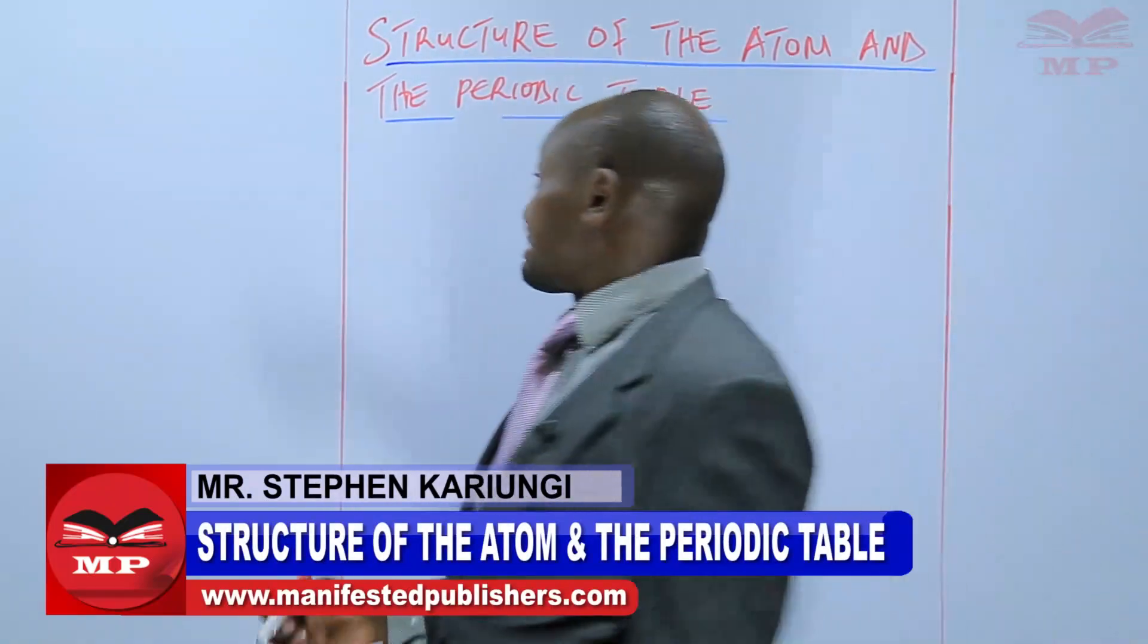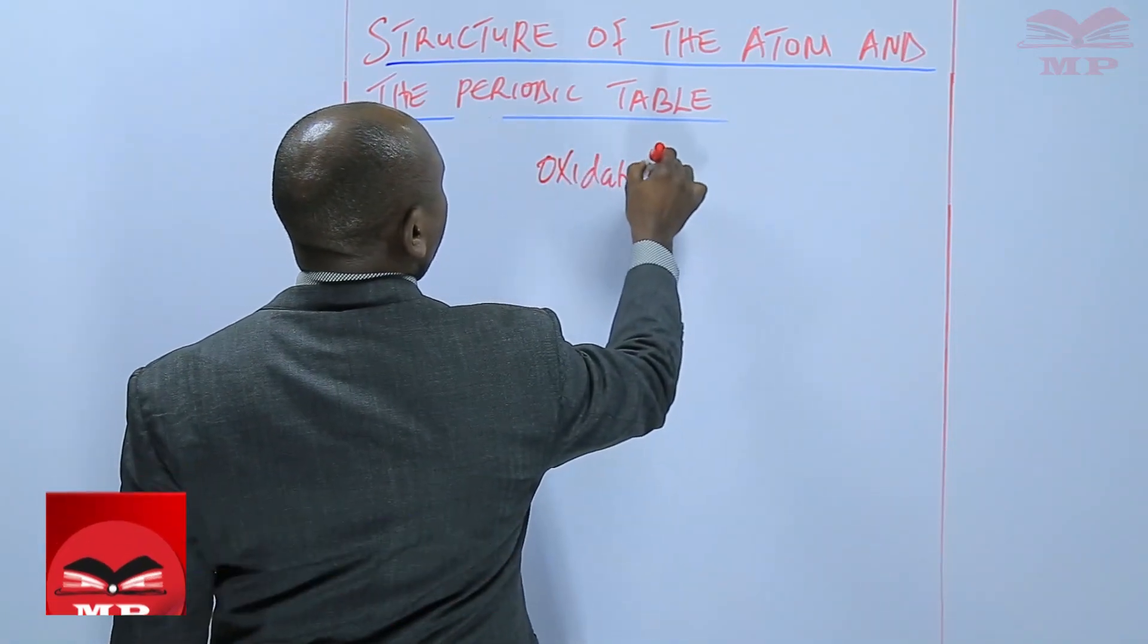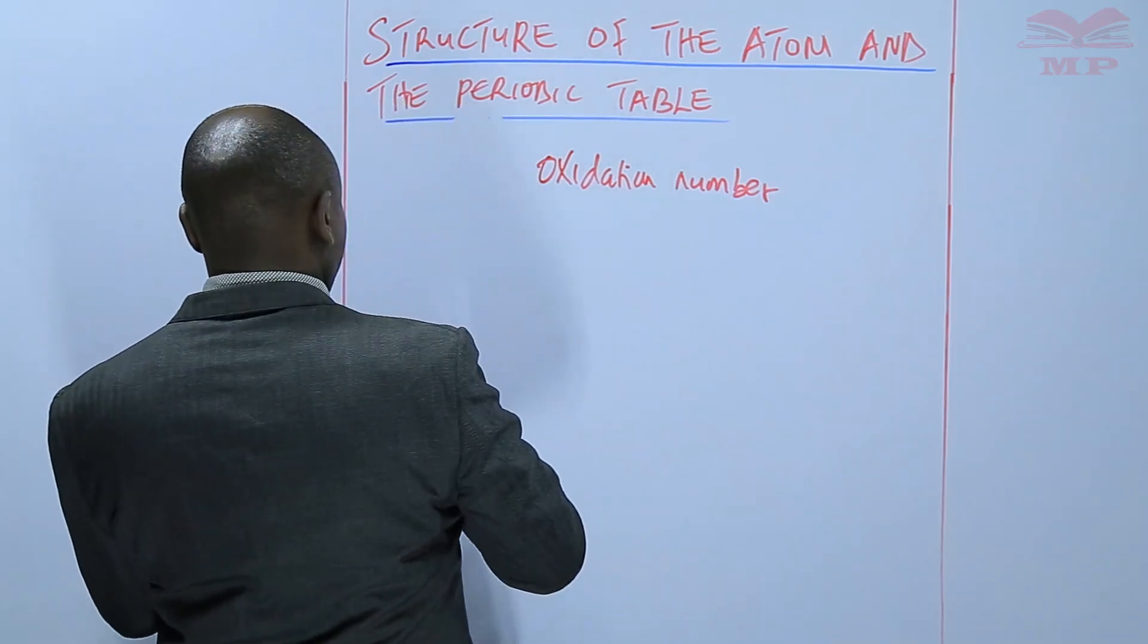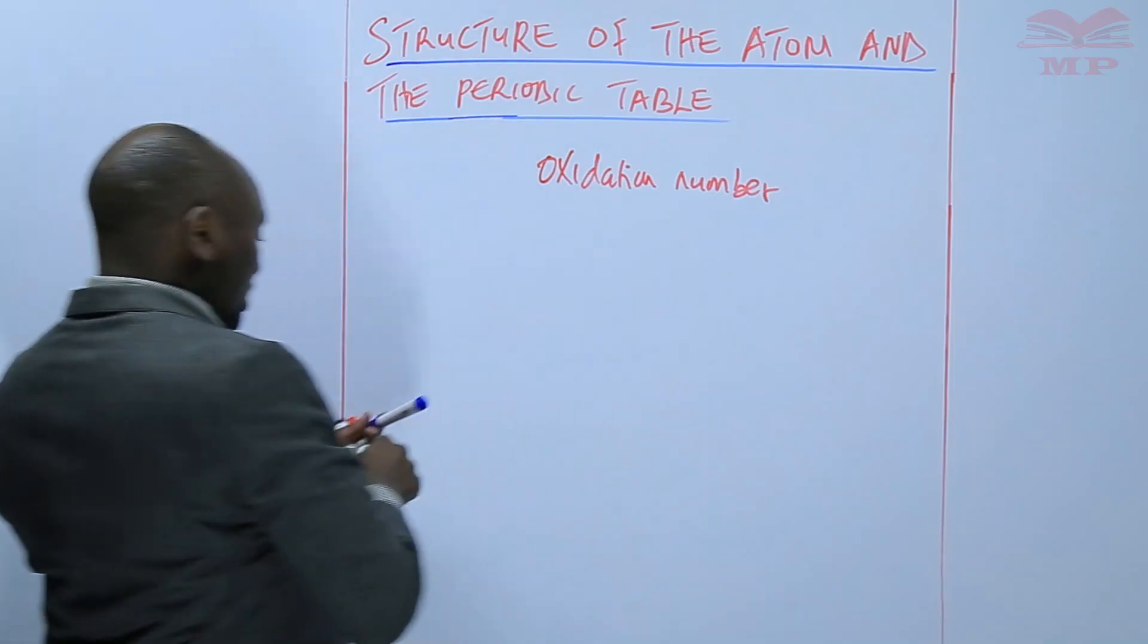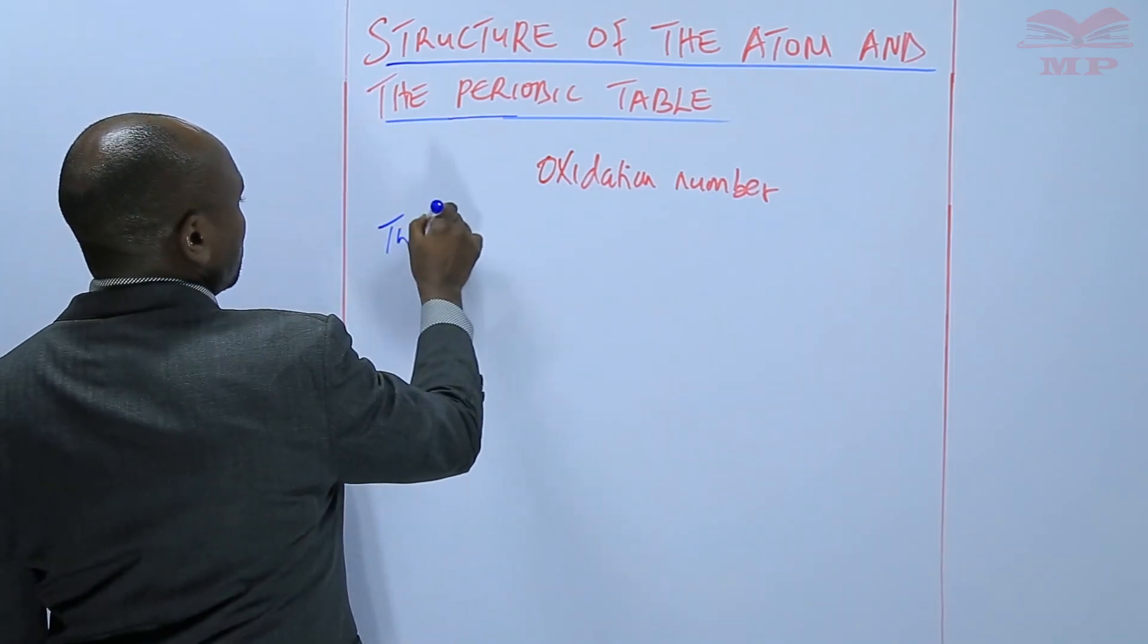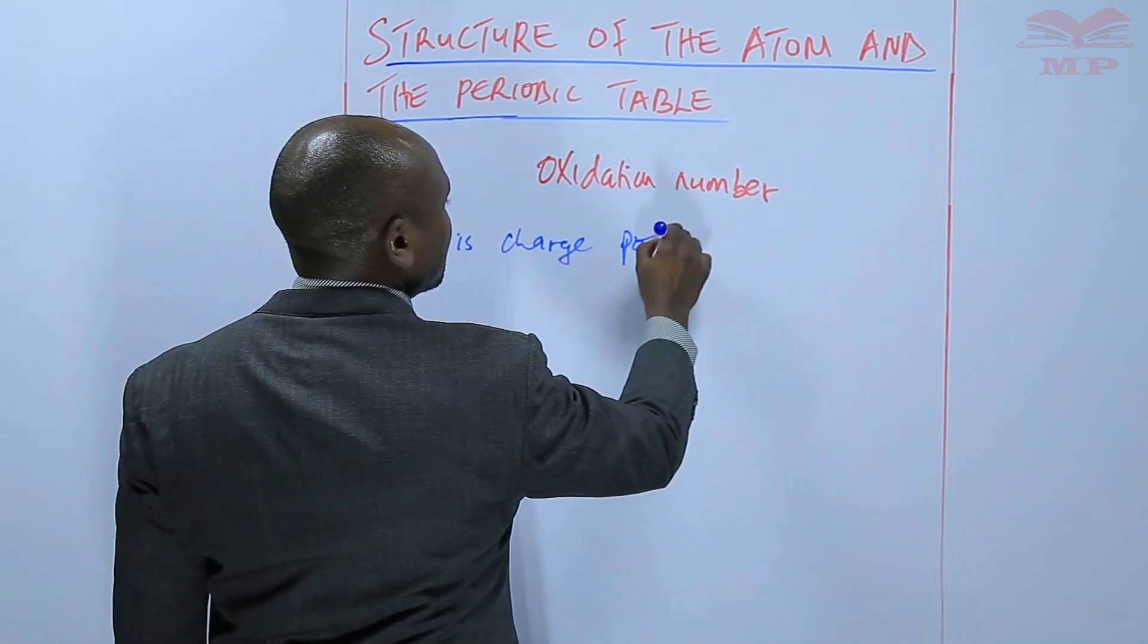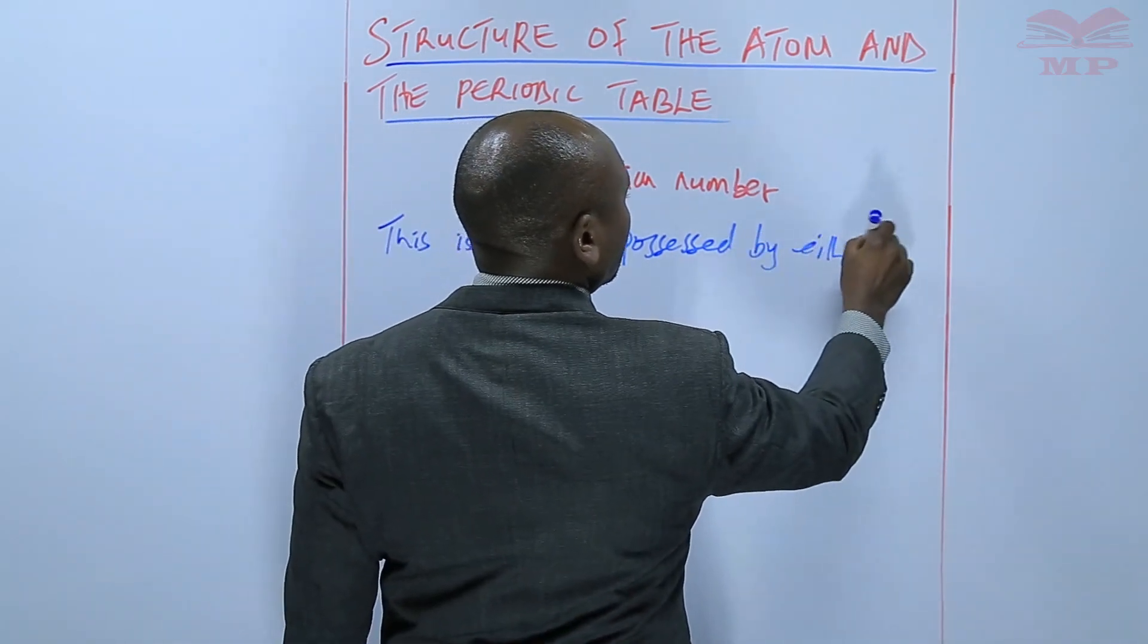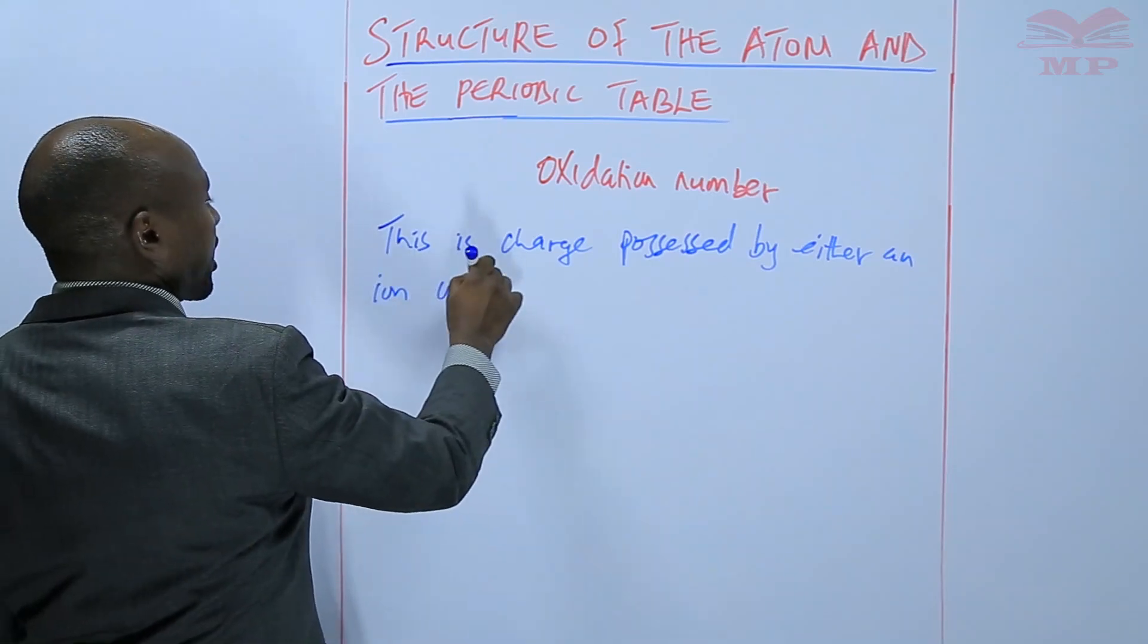So today we are going to discuss oxidation number. Oxidation number, this is the charge possessed by either an ion or a radical.